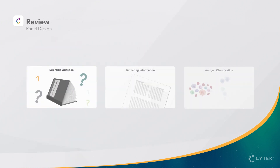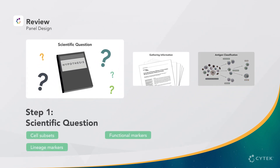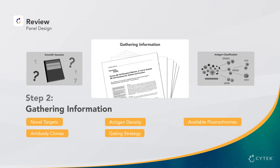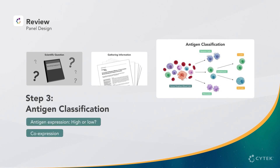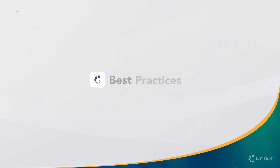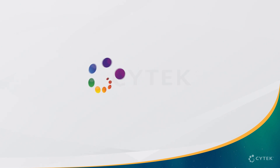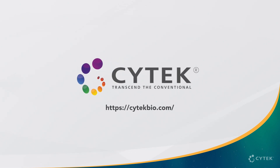To recap: the first step in panel design is to identify your scientific questions and populations of interest. Second, gather details such as appropriate clones, antigen density, and gating strategy. Third, use this information to classify the antigens based on their expression and co-expression. This concludes Step 1 of our panel design series. In Step 2, we will show you how to proceed with fluorochrome selection. Visit SciTech's Spectralearn Education page to learn more on this and many other topics.